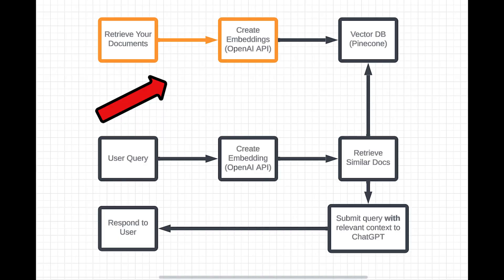Before we can answer a user's question, we need to prepare our data set. That means we need to take our documents and create what's called embeddings for them. Embeddings capture the essence or the meaning of the document in a numerical form. This allows us to compare different documents and see how similar they are in meaning. This is called semantic search, as opposed to keyword search.